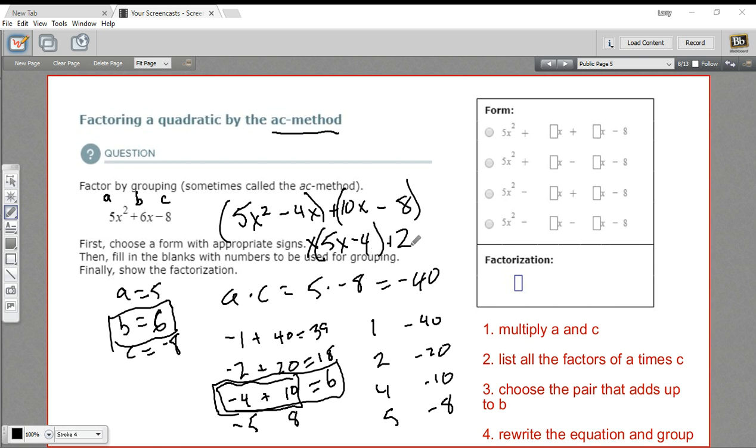And in this one, we can factor out a 2. So we'd get, aha, 5X minus 4. So in this case, we've got the same term in parentheses. If that's the case, you can change this around to X plus 2 times 5X plus 4.